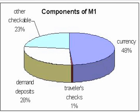M1 is the narrowest definition and measure of the money supply. It includes assets used primarily for transactions or as a medium of exchange. M1 includes currency and coin held by the non-bank public, demand deposits, or other checkable deposits and traveler's checks.